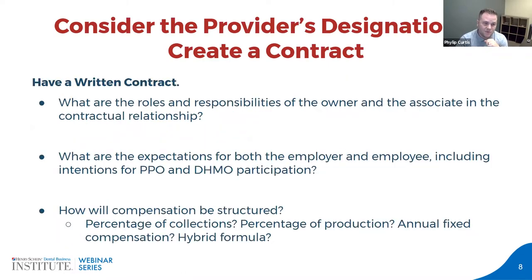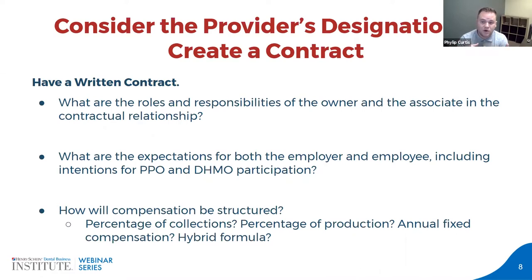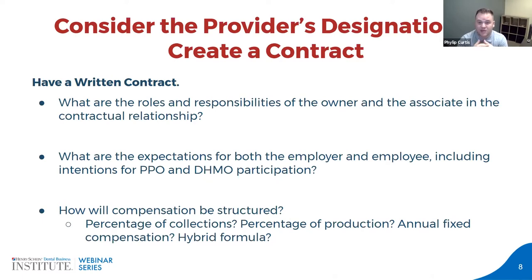One thing that most practices fail to do is have some type of written contract. You want to consider the roles and responsibilities of the owner versus the associate, the expectations for both parties including intentions for PPO and HMO participation, and how compensation is going to be structured — whether that's a percentage of production, a percentage of collections, an annual fixed compensation, or a hybrid arrangement.